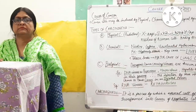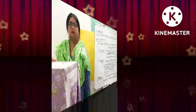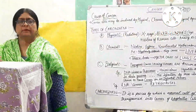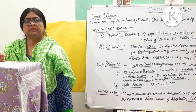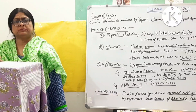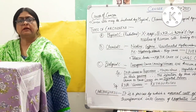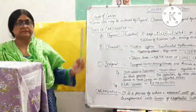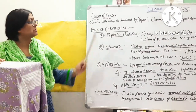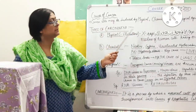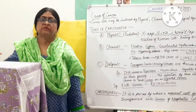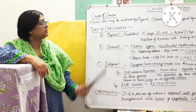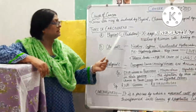So far we have discussed the definition and the types of tumors in this lecture. Now we come to the causes of cancer. Cancers are caused by physical, chemical, and biological agents, which are also known as carcinogens. The first one is physical carcinogens.